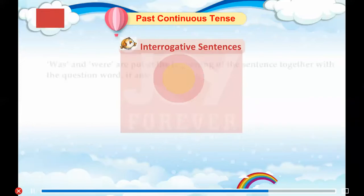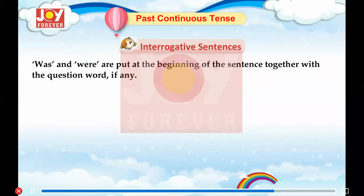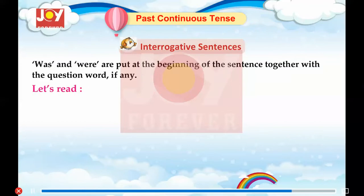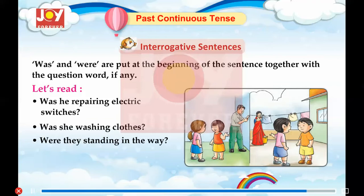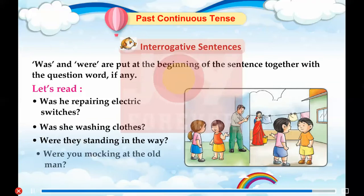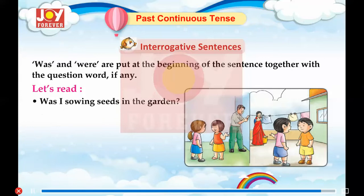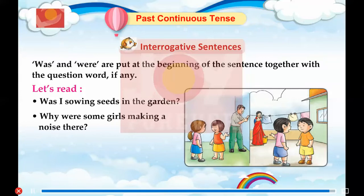Interrogative Sentences. 'Was' and 'were' are put at the beginning of the sentence, together with the question word if any. Let's read: Was he repairing electric switches? Was she washing clothes? Were they standing in the way? Were you mocking at the old man? Was I sowing seeds in the garden? Why were some girls making a noise there?